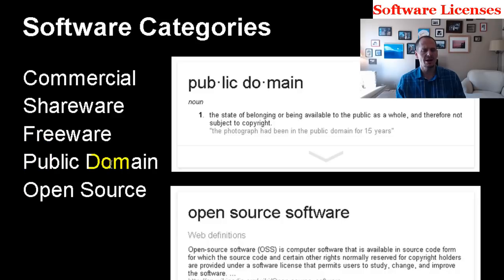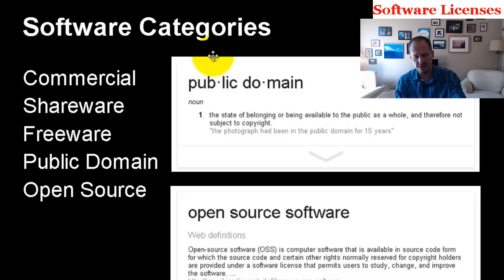Public domain software is software owned by the public — it's in the public domain. Usually there is no license agreement, because nobody individually owns it; we all own it.